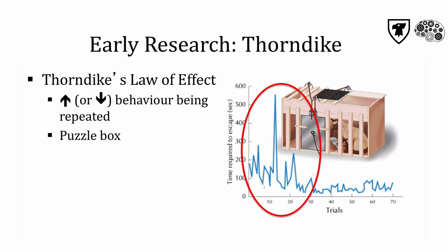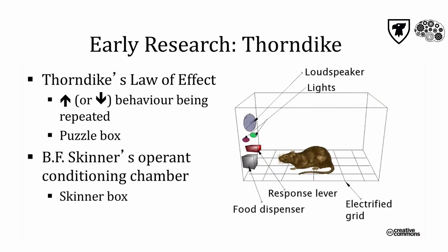B. F. Skinner later coined the term 'operant' to mean any action that operates on the environment to produce specific consequences. He invented the operant conditioning chamber, which is usually called a Skinner box. This is an improvement over Thorndike's puzzle box because it's designed to measure and manipulate many behaviors. Animals tested in a Skinner box can make many responses to obtain their desired outcome, such as pressing a lever multiple times, compared to only one response — escape — in Thorndike's puzzle box.